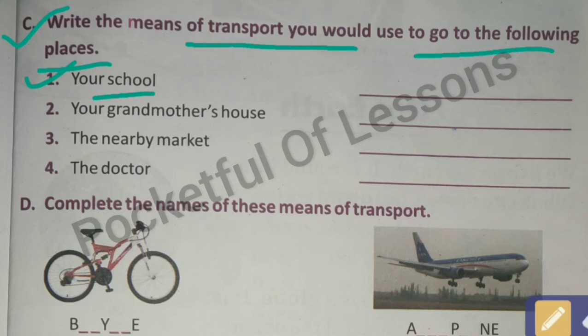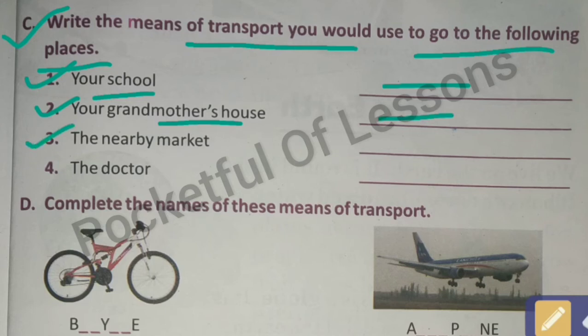Number 1 is your school - when you go to school, which means of transport do you take? Write the name here, whether it is bus, bicycle, or cart. Number 2: your grandmother's house - which means of transport do you take to go there? Write here. Number 3: the nearby market - which transport do you take to go to the market near your home? Write here.